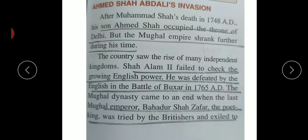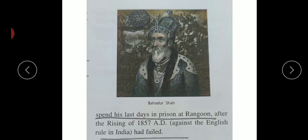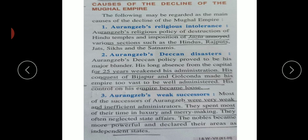Ahmad Shah Abdali's invasion: after Mahmud Shah's death in 1748, his son came into power and wanted to expand the empire. Shah Alam II was checking that Indian powers were losing. In the Battle of Buxar, the Mughal dynasty came to an end. Bahadur Shah Zafar - the last emperor and poet-king - tried to fight the British in 1857 but failed, and was sent to prison in Rangoon.